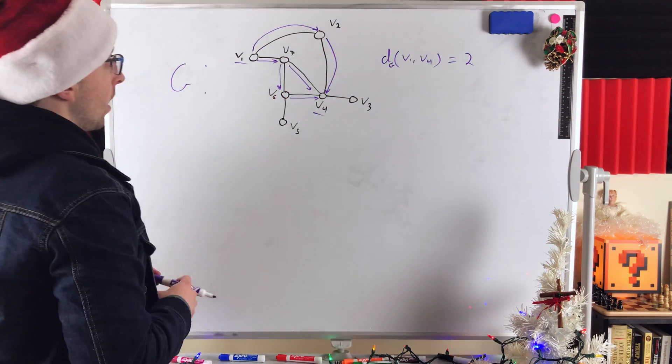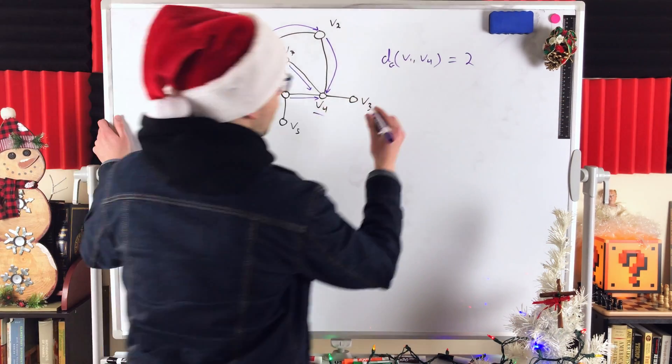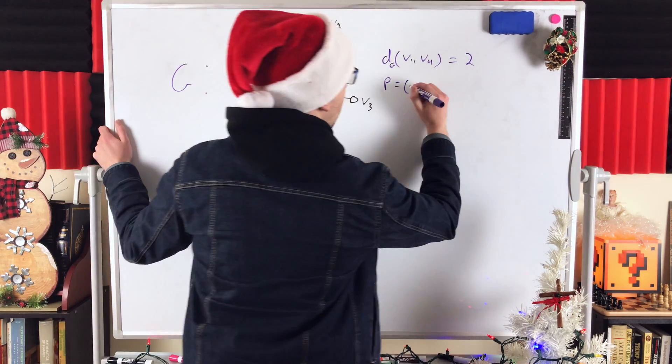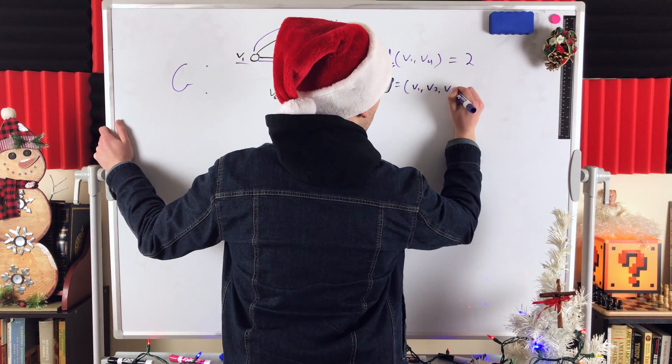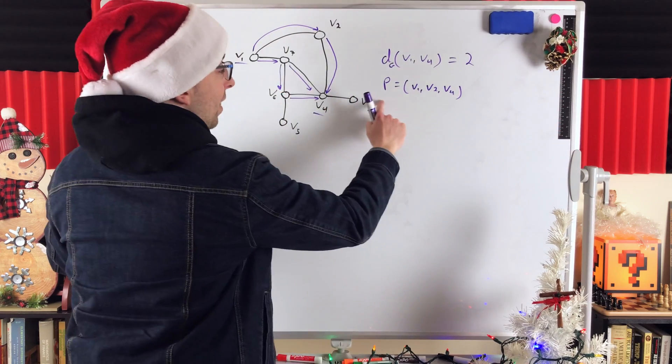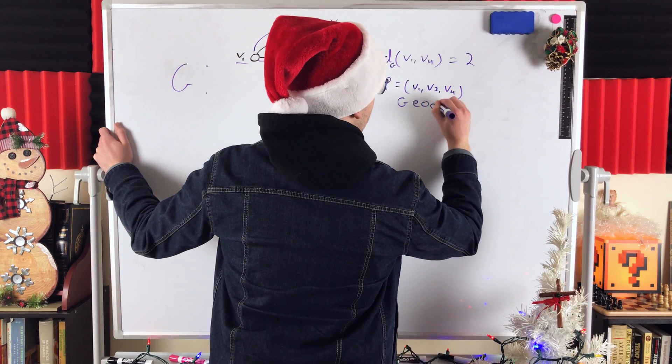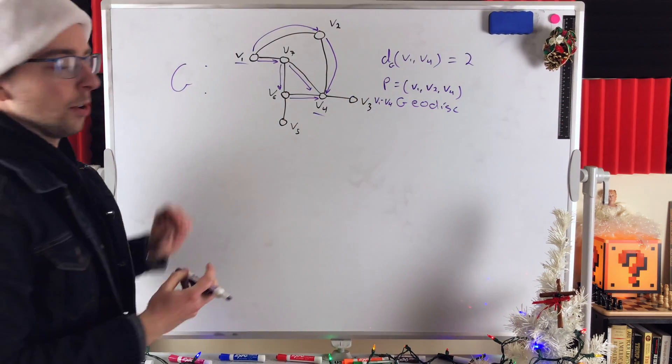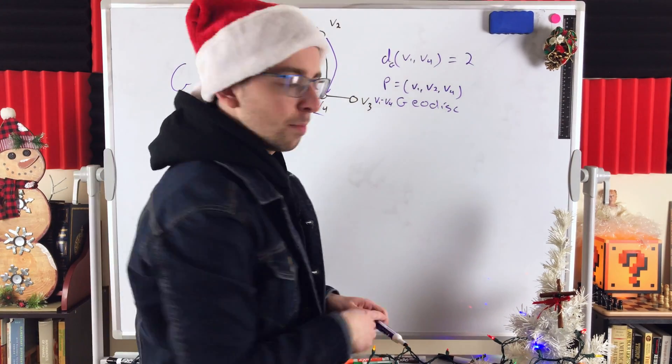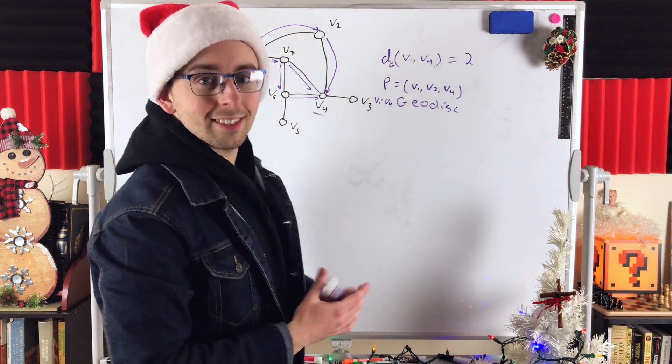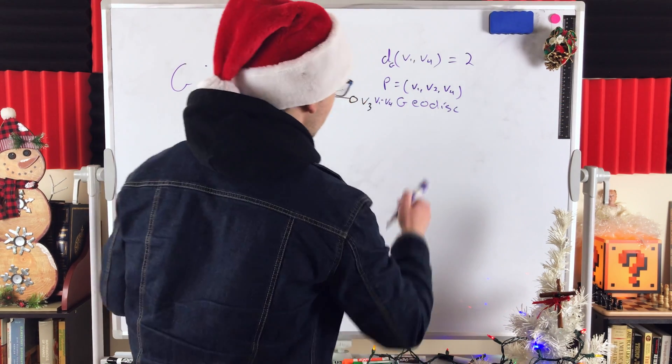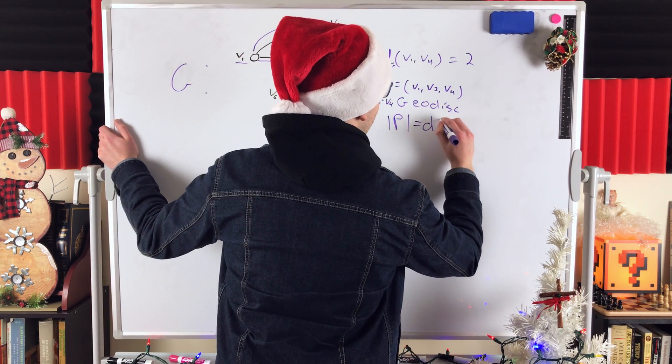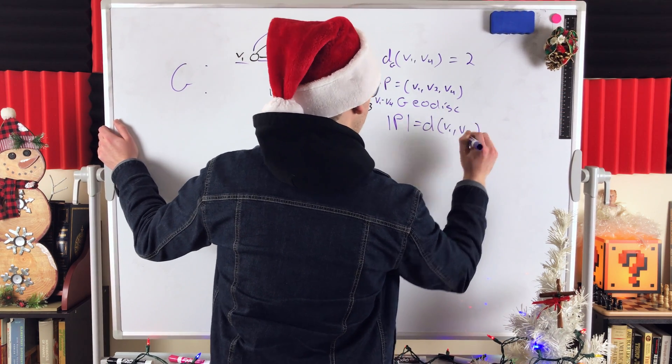So, one other thing I should mention. This path, if I just write this out, we'll say P. A path going from V1 to V2 to V4. However, we call a path like this a geodesic. In particular, it is a V1, V4 geodesic. A geodesic between two vertices is a path of shortest length that connects them. So, since P is a geodesic, we know that the length of P is the distance between V1 and V4.